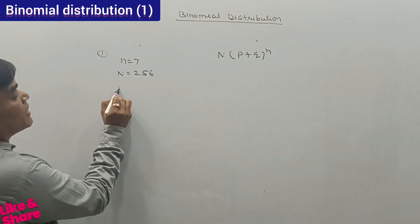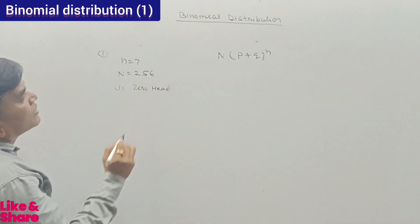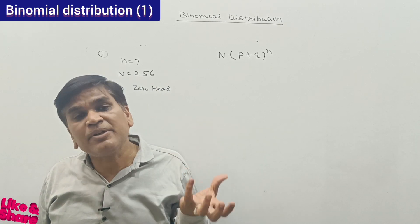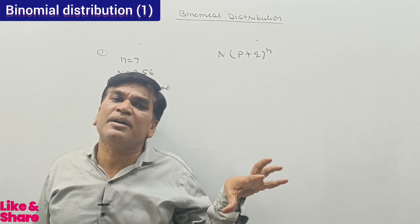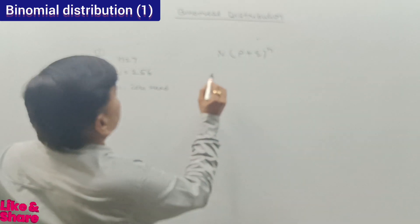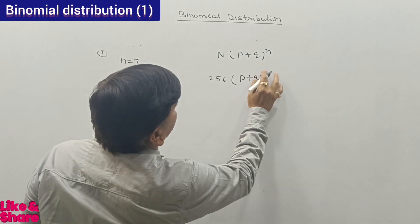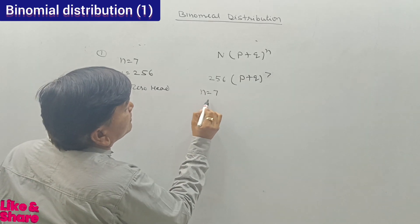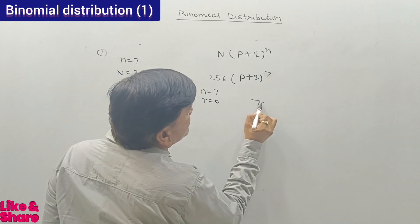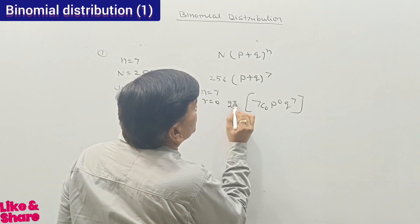How many times will we get zero heads — that is, all tails? We toss seven coins 256 times. The formula is 256 times (p + q) raised to power 7. Here n = 7 and r = 0 because we want zero heads. So we compute 7C0 × p^0 × q^7, repeated 256 times.